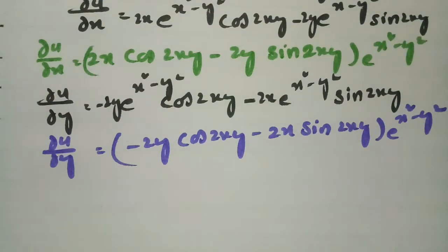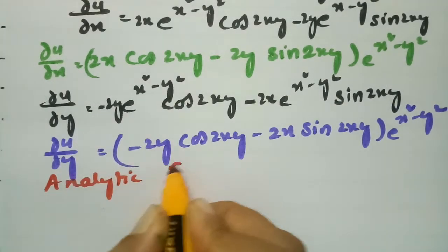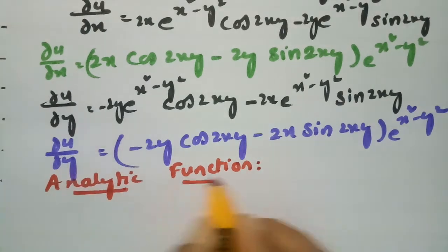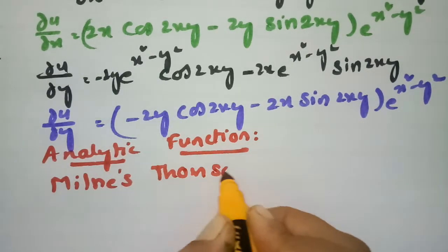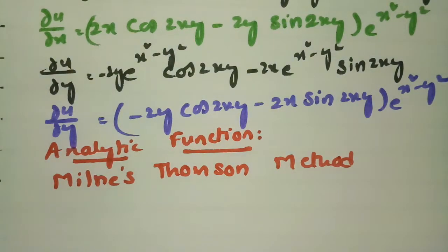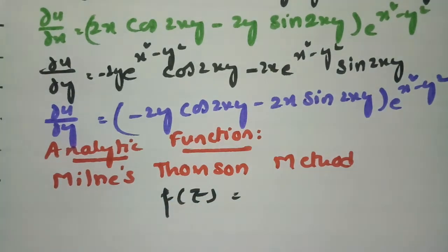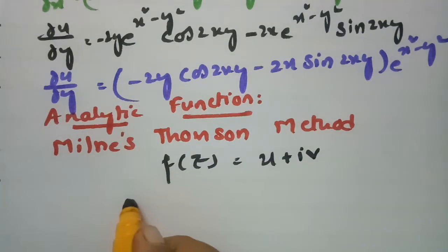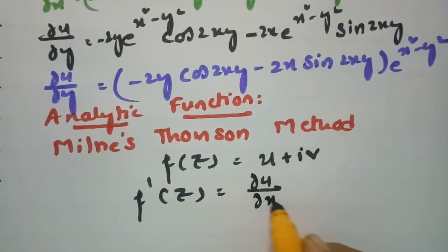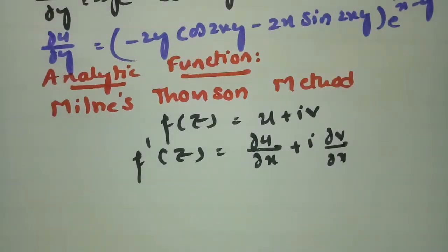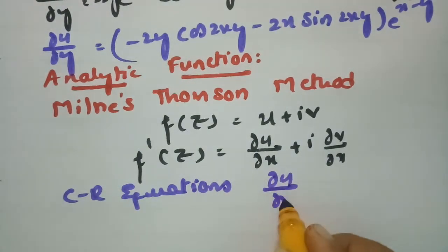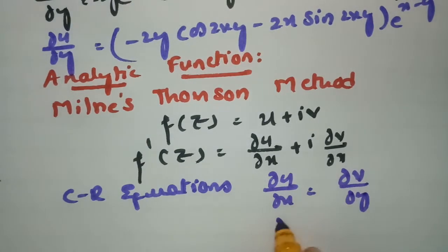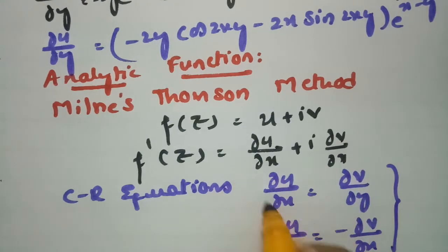We now have both ∂u/∂x and ∂u/∂y. To find the analytic function I am using Milne's Thompson method. According to this method, f(z) = u + iv, so f'(z) = ∂u/∂x + i·∂v/∂x. The Cauchy-Riemann equations are ∂u/∂x = vy and ∂u/∂y = −vx.